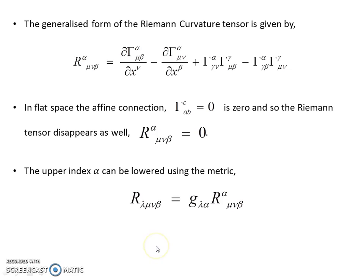The generalized form, we can replace the 1 and the 2 with general indices, and so that's the generalized form for any situation you might come across. Just a reminder, in flat space the affine connection is zero, so the Riemann tensor itself also disappears. And that's a measure of how you identify flat space.